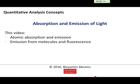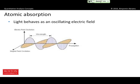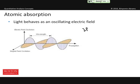In this video, we're going to discuss atomic emission and absorption, and how emission from molecules is different from emission from atoms. For our purposes, let's start by talking about light. Light will behave as an oscillating electric field. Light, which is just electromagnetic radiation, has a frequency at which the oscillations occur.